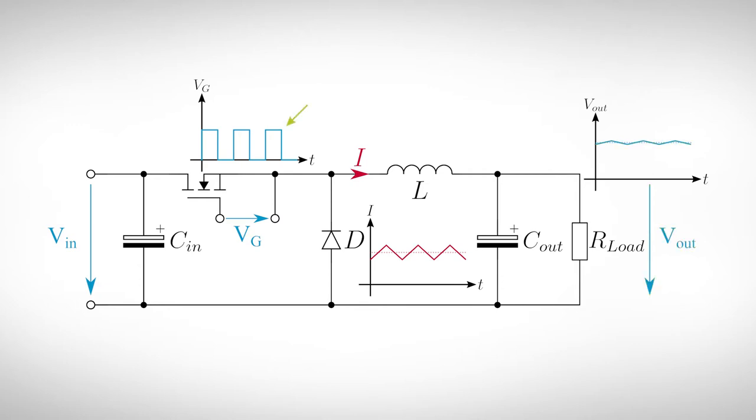The gate is hereby switched by a square-shaped voltage with a fixed frequency. Only its duty cycle is adjusted. For the investigation, we will split the circuit into two phases: Phase 1, in which the transistor is closed, and phase 2, in which it is open.